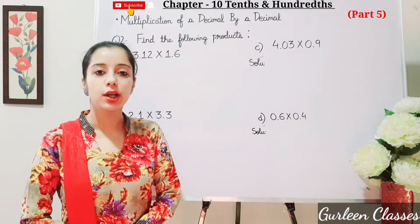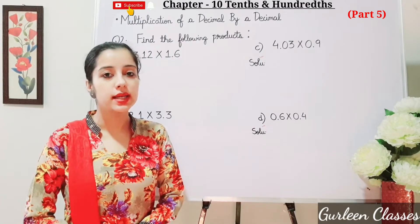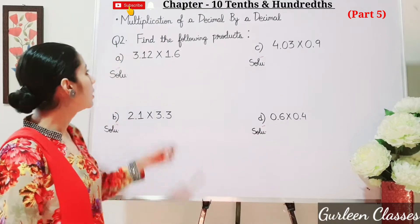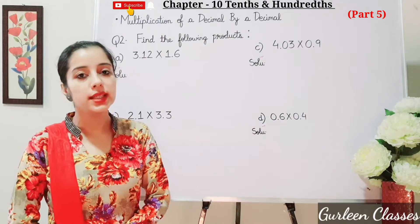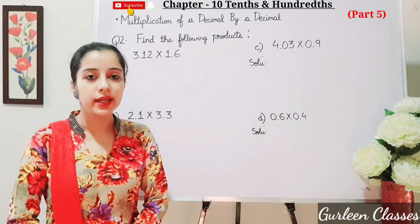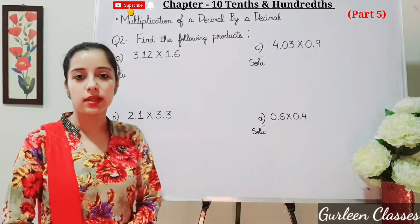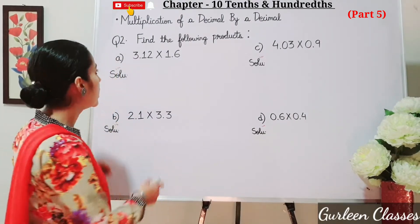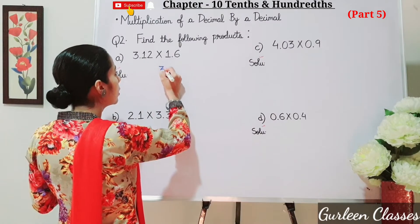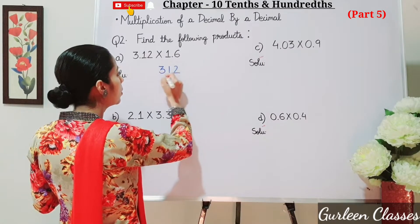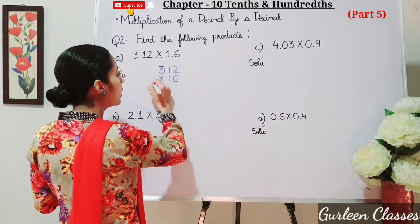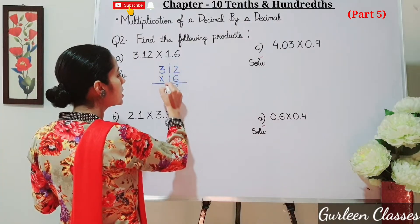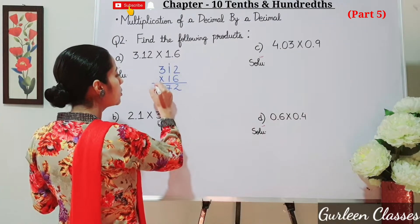Next topic: multiplication of a decimal by a decimal. Question number 2, find the following products. Part a: 3.12 into 1.6. Here we have to multiply a decimal by a decimal. Again we will ignore the decimal point and multiply. So let us multiply 312 into 16. We have ignored the decimal point. 6 twos are 12, 1 carry. 6 ones are 6, that is 7. 6 threes are 18.